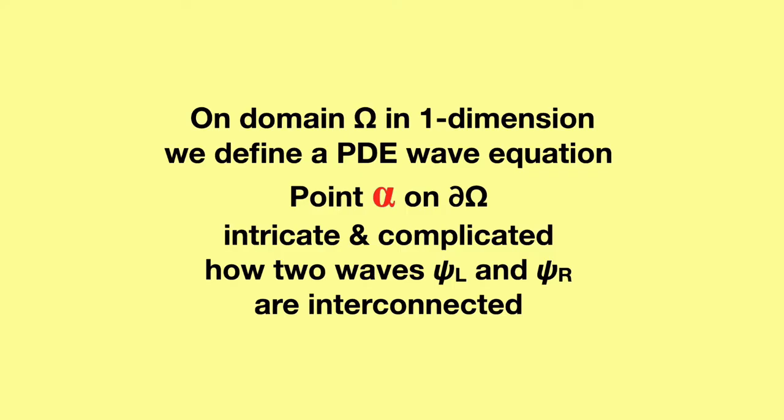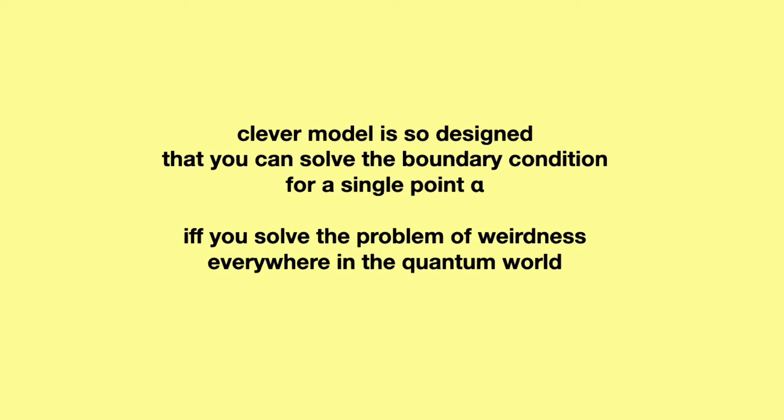But you never heard anything like what I'm about to say. On domain omega in one dimension, we define a partial differential wave equation. Point alpha on the boundary of omega is the location of an intricate and complicated boundary condition which specifies how two waves going in opposite directions, psi L and psi R, are interconnected.